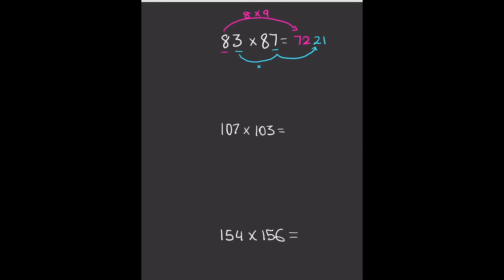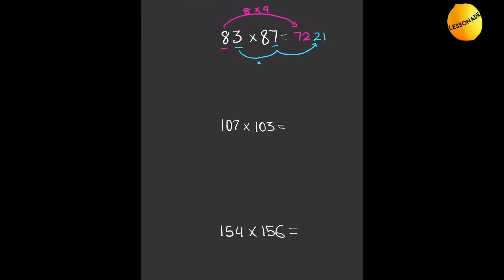Now let's get started with the three-digit questions. This time, instead of just the tens digit, we're going to use the hundreds and the tens digits together. The hundreds and tens value here is 10, so we multiply 10 by its next highest number, which is 11. 10 times 11 is 110, and we write that 110 there. Then we do 7 times 3, which is 21, and write that 21 there.